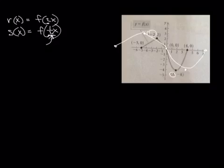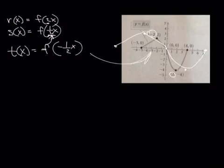Last one, part (e): the only difference is they put a negative one-half inside. That gives the same graph as part (d), but it flips it around because of the negative — it just reflects across the y-axis. In the next video, we will finish up and go over how to do this without too much trouble.